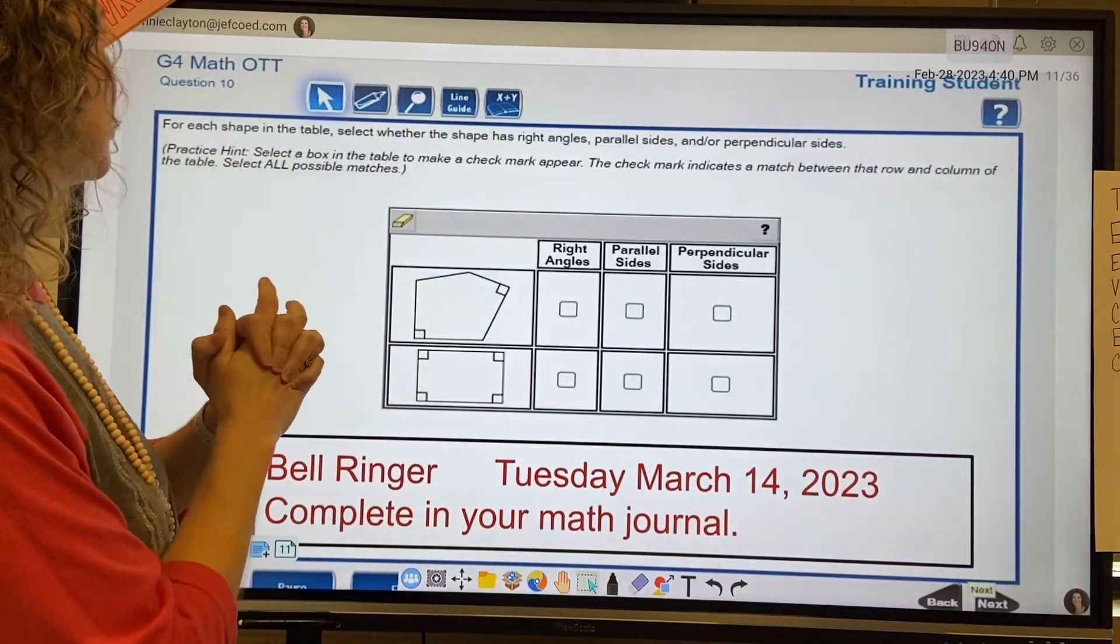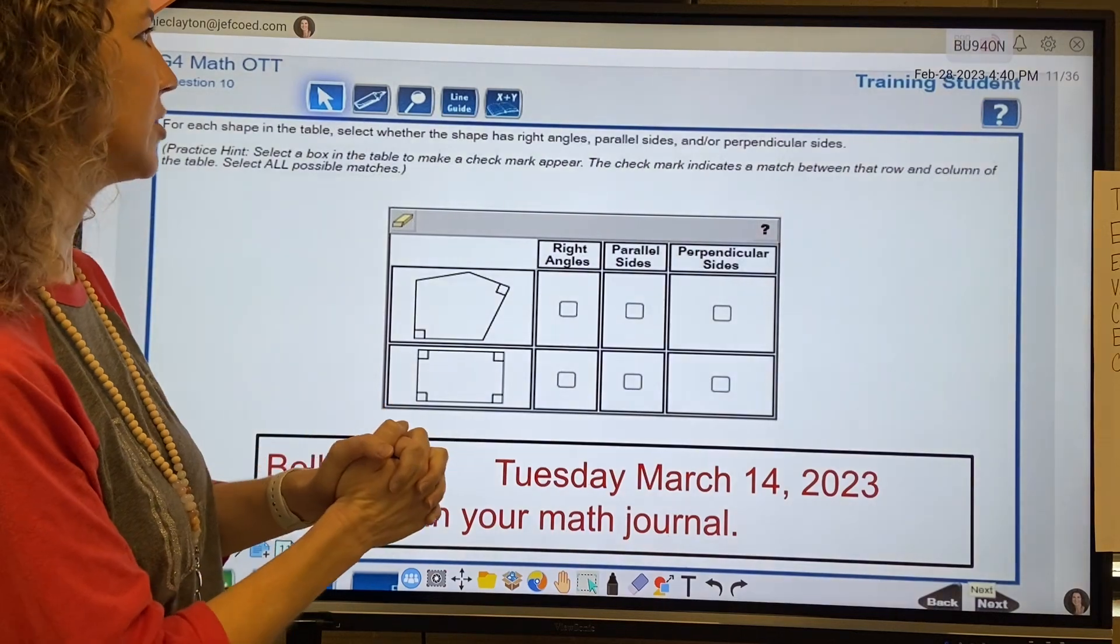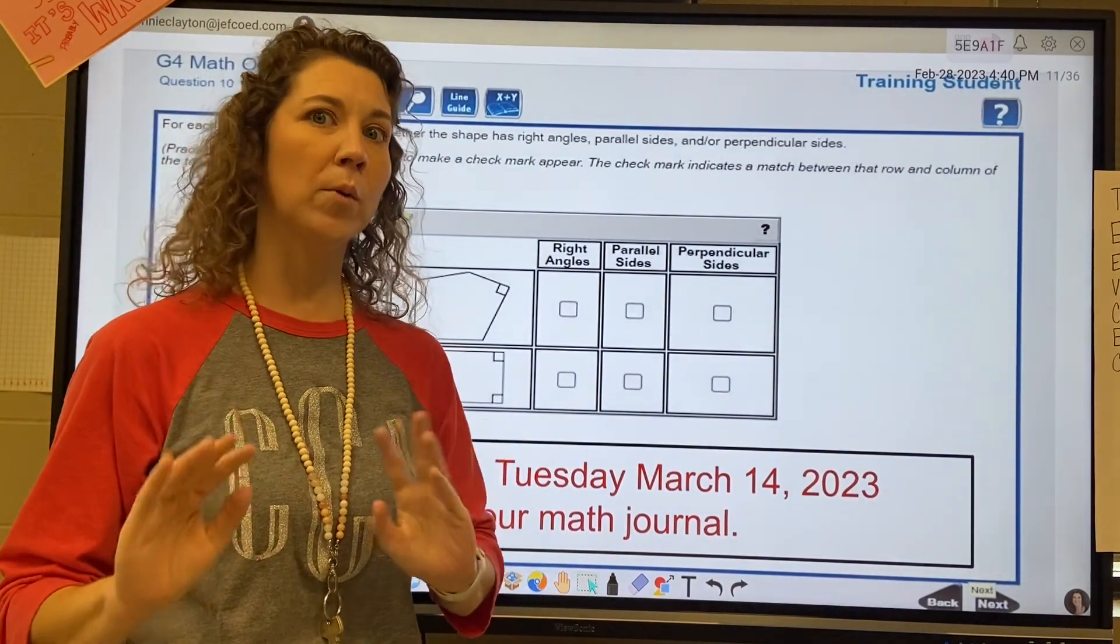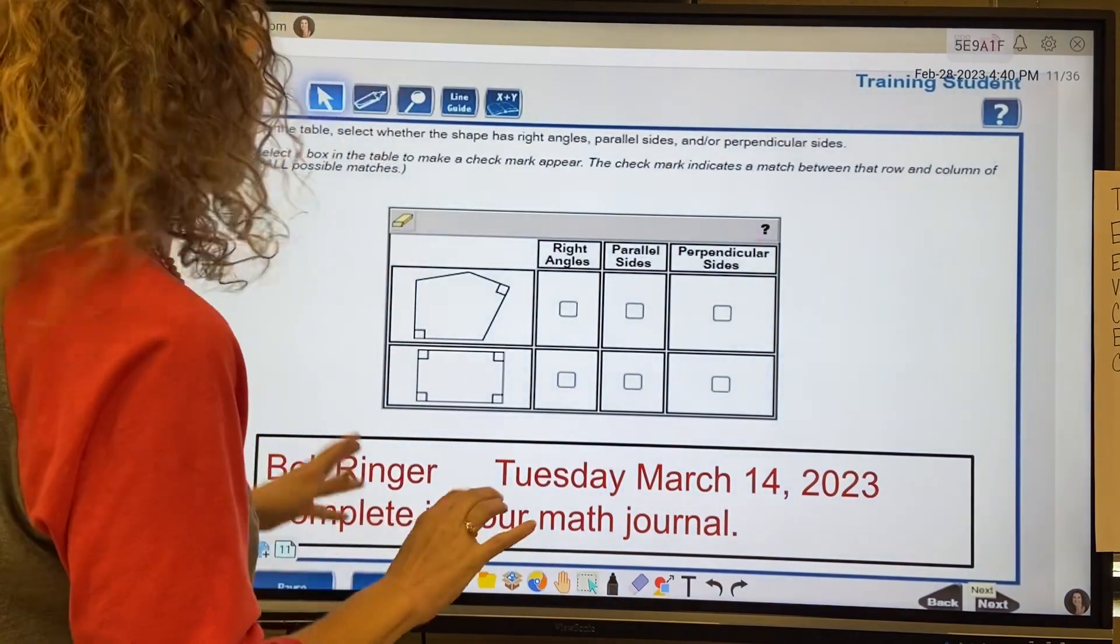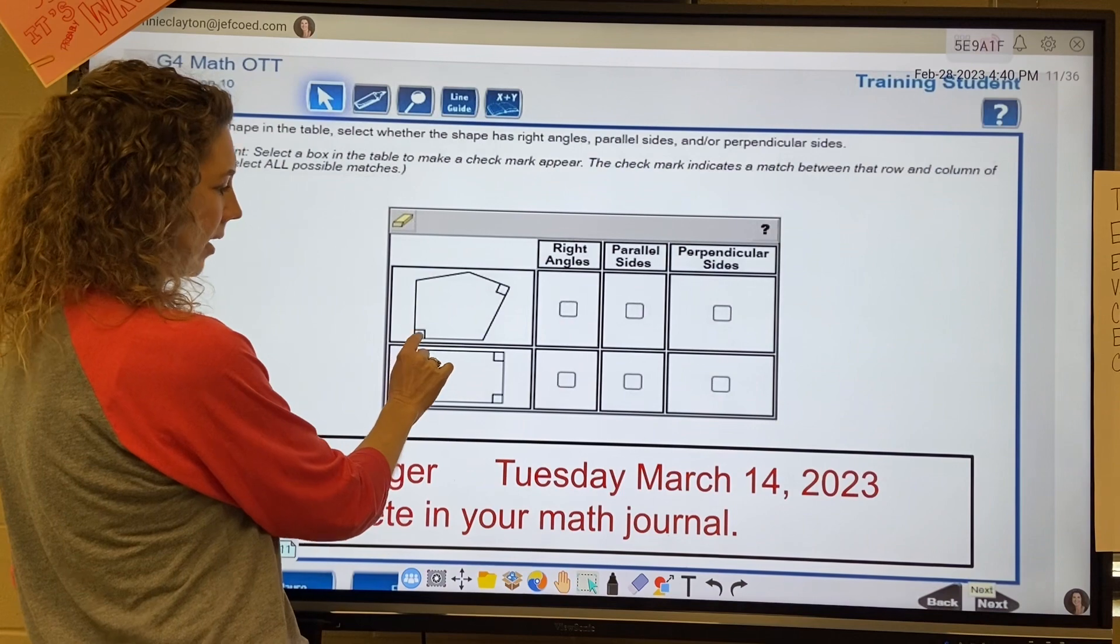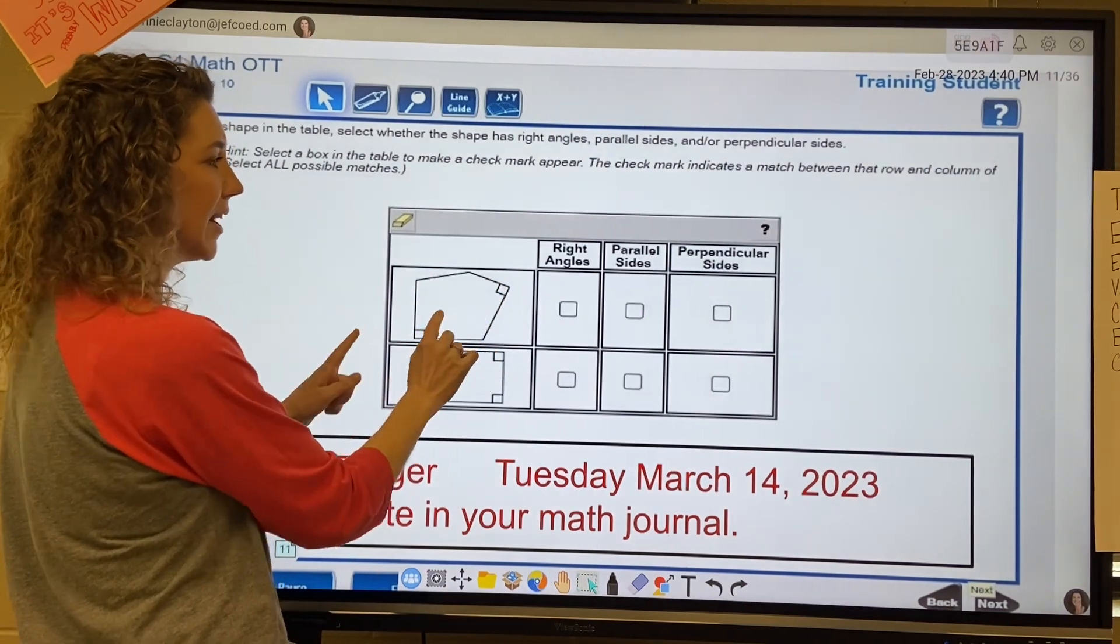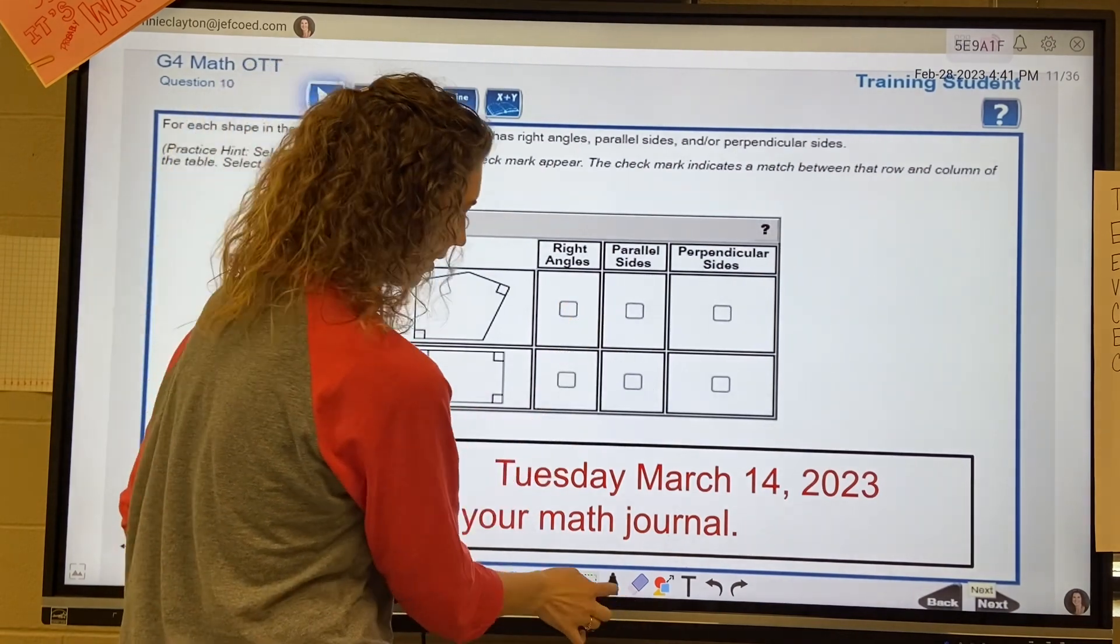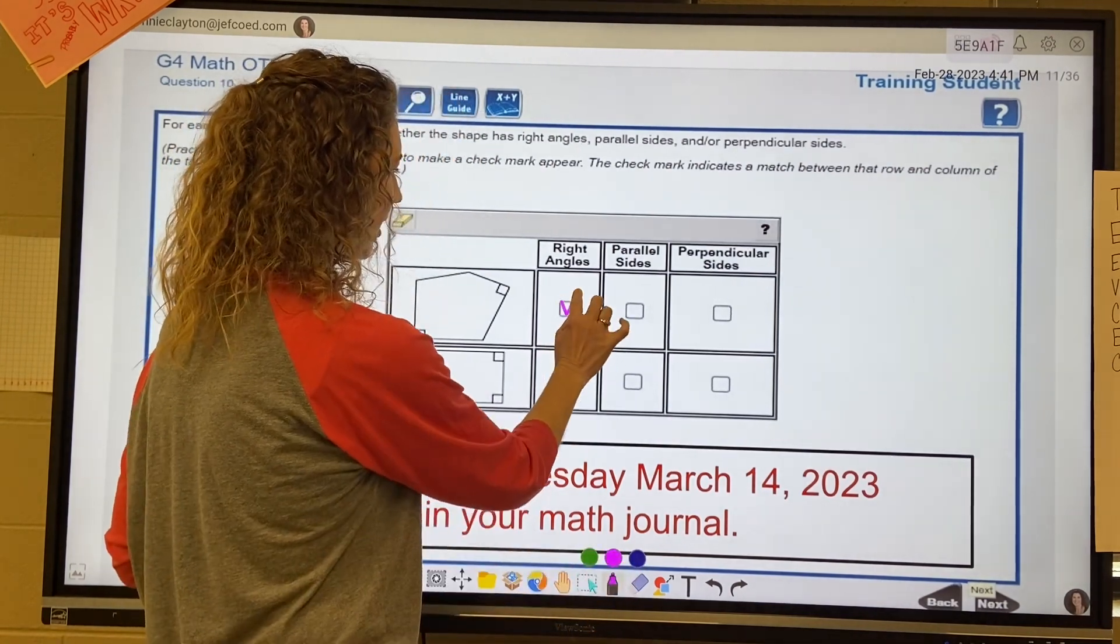This one says for each shape in the table, select whether the shape has right angles, parallel sides, or perpendicular shapes. Remember this is a fourth grade question, so those vocabulary words are kind of tricky to them. So this one, if you look, that little box in the corner, that is a right angle box. So we're going to check that it has right angles.